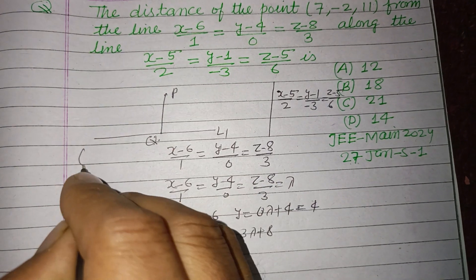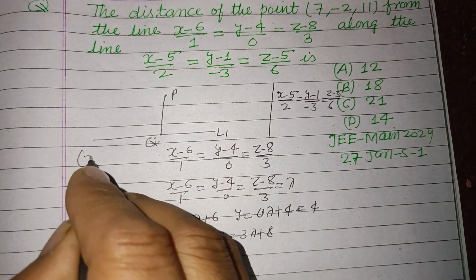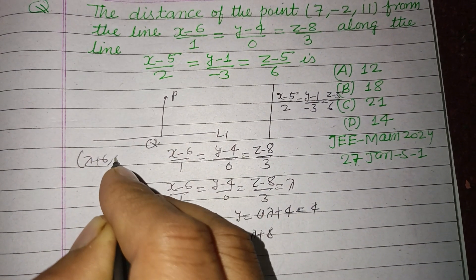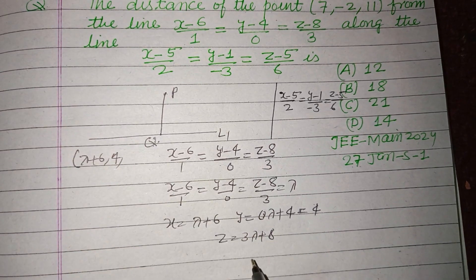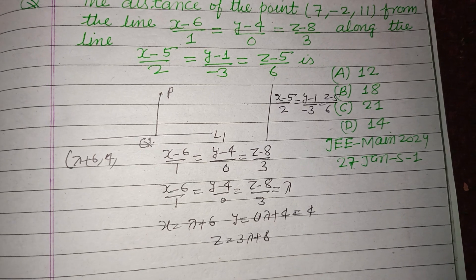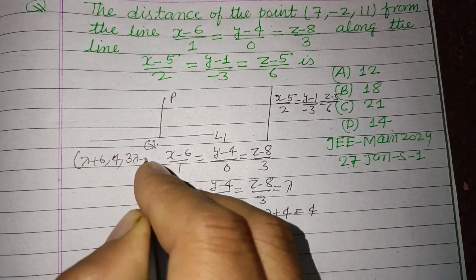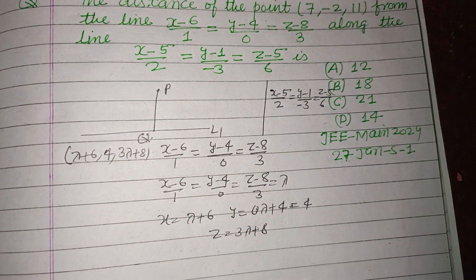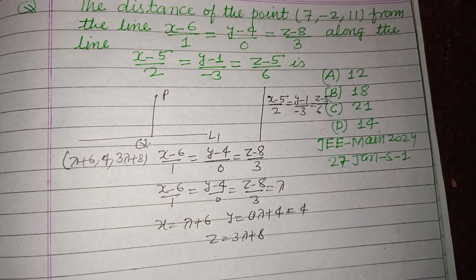the point we obtain here is Q(λ+6, 4, 3λ+8).